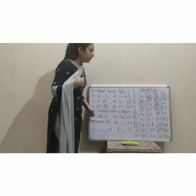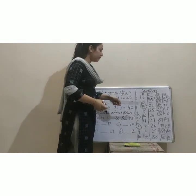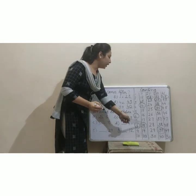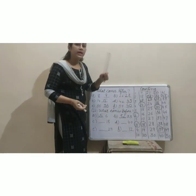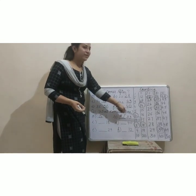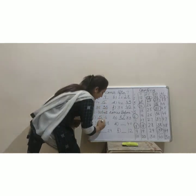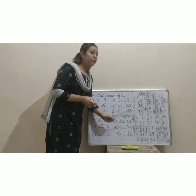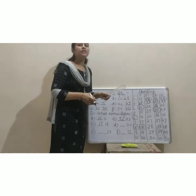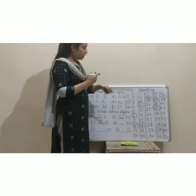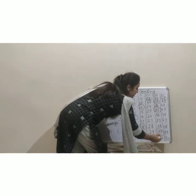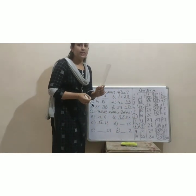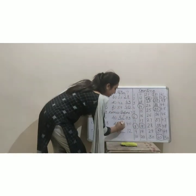Next is 18. Where is 18? This one. Very good — what comes before 18? 17 — very good, clapping! Write here 17. Next is 40. What comes before 40? Where is 40? This one is 40. What comes before 40? 39 — yes! Your answer is 39, write here 39.